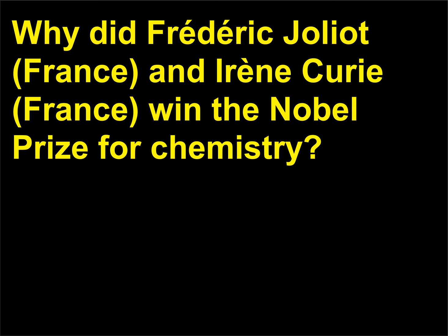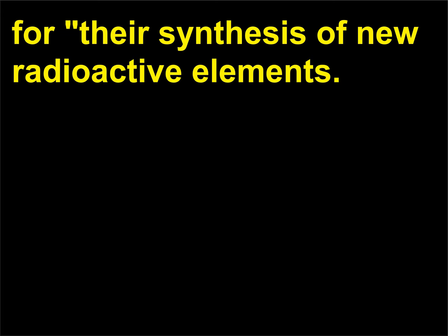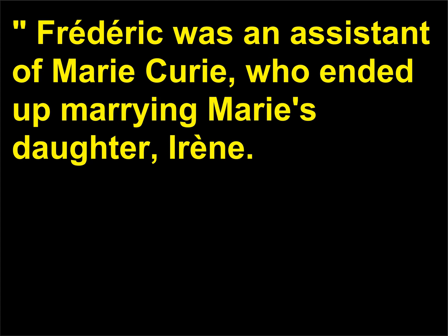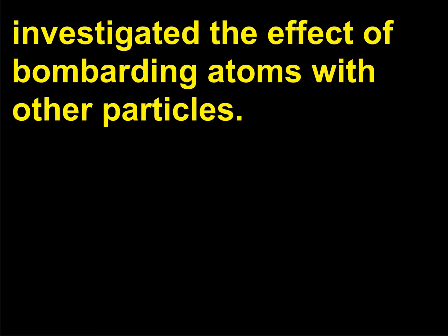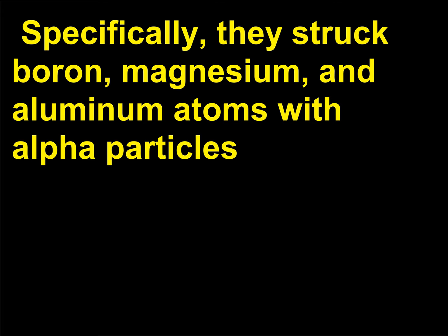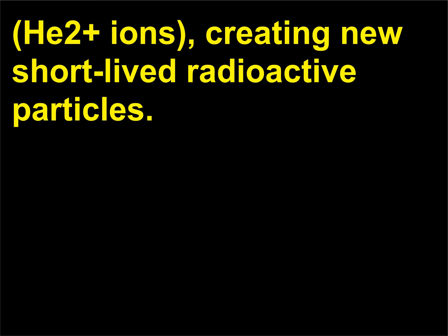Why did Frédéric Joliot, France, and Irène Curie, France, win the Nobel Prize for Chemistry? For their synthesis of new radioactive elements. Frédéric was an assistant of Marie Curie, who ended up marrying Marie's daughter, Irène. The husband and wife team of Joliot and Curie collaborated on experiments that investigated the effect of bombarding atoms with other particles. Specifically, they struck boron, magnesium, and aluminum atoms with alpha particles — He²⁺ ions — creating new short-lived radioactive particles.